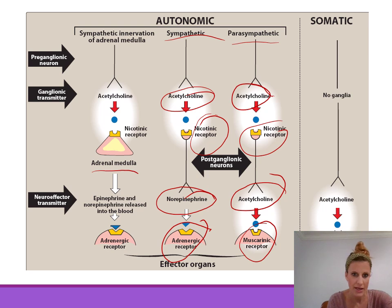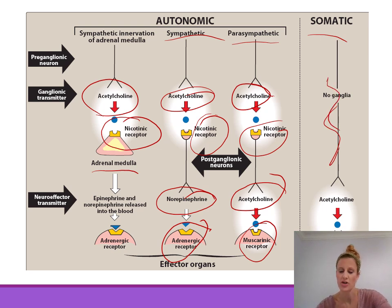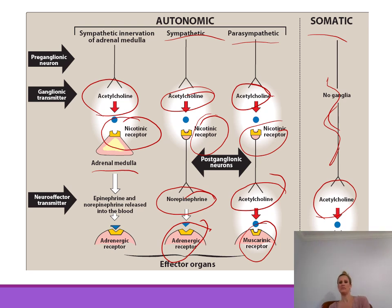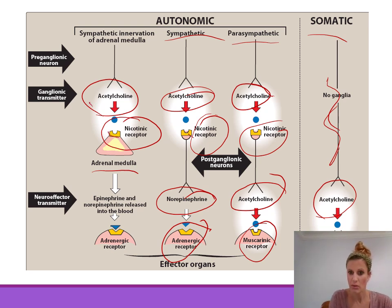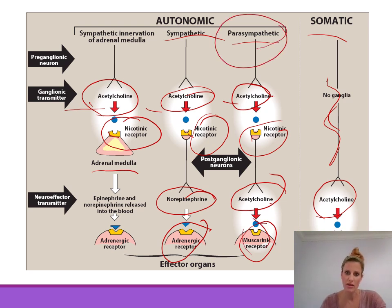The adrenal medulla is innervated by a cholinergic neuron that releases acetylcholine binding to a nicotinic receptor. In the somatic nervous system, there is no ganglia — acetylcholine is released directly into the skeletal muscle fiber, binding to a nicotinic receptor. At postganglionic synapses, acetylcholine binds to a muscarinic receptor only as part of the parasympathetic nervous system.